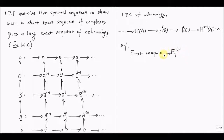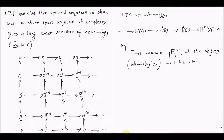All the objects in the first page will be zero, because we have already assumed that this is a short exact sequence, so each of those columns will be exact. When we take the cohomology along each column, each cohomology will be zero. The sequence will stabilize after page one, and most importantly, we will get the cohomology of the total complex equal to zero.